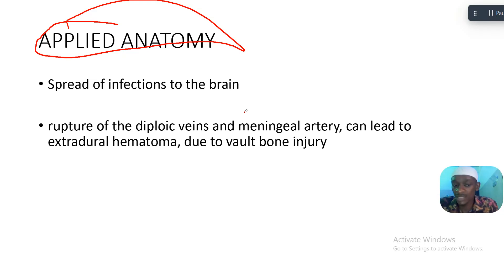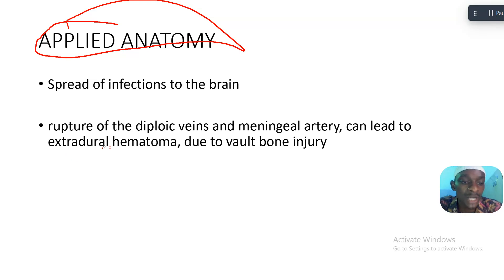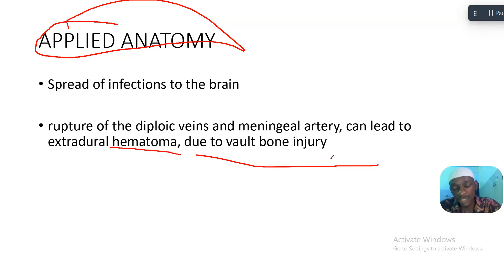Rupture of the diploic veins and the meningeal artery can lead to an extradural hematoma. This is due to vault bone injury.